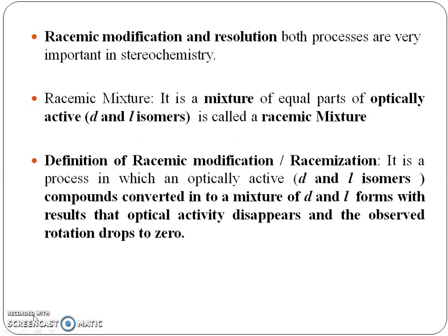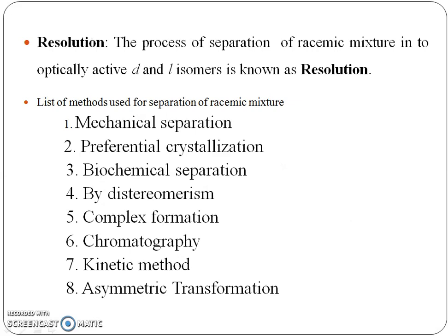To summarize: a racemic mixture is a mixture of equal parts of optically active D and L isomers. Racemic modification, also called racemization, is a process in which optically active compounds are converted into a mixture of D and L forms, such that optical activity disappears and the observed rotation drops to zero. Resolution means the separation of a racemic mixture into optically active D and L isomers.